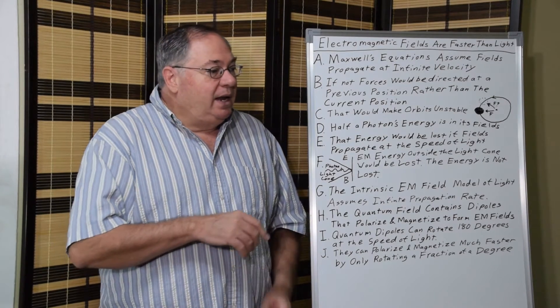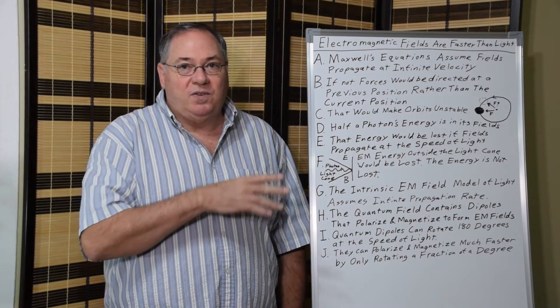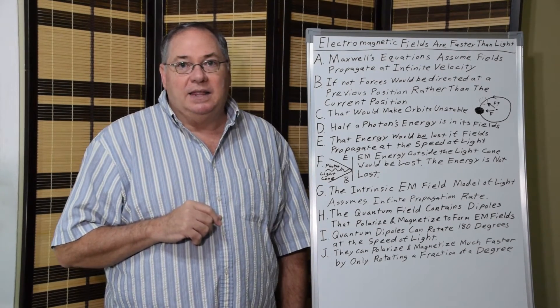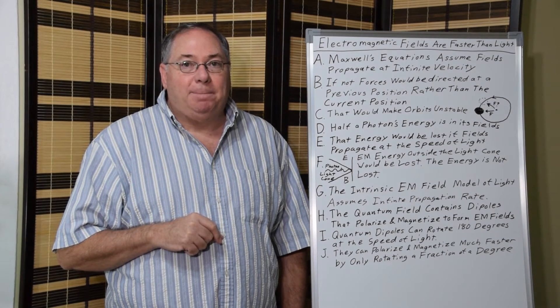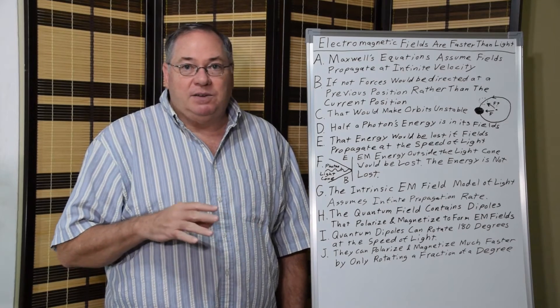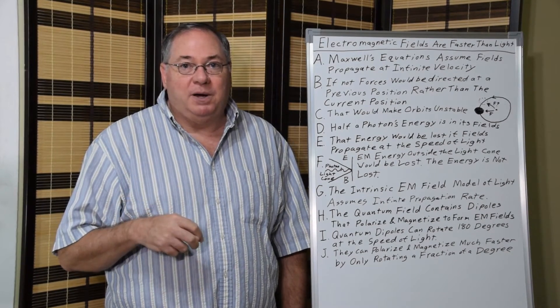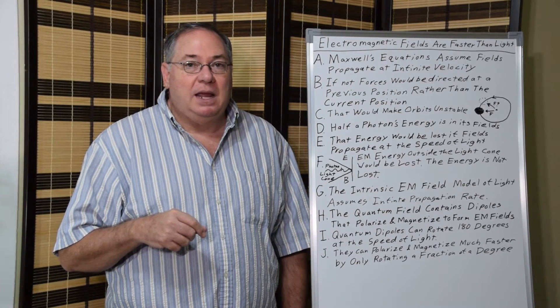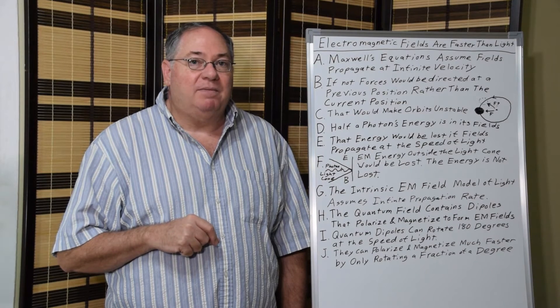So anyway, it's very obvious, based on Maxwell's equations and light, that the electric magnetic fields propagate faster than light. And it's very obvious if we use the quantum field model, the particle pair model for the quantum field, we can understand how electric magnetic fields propagate faster than light.